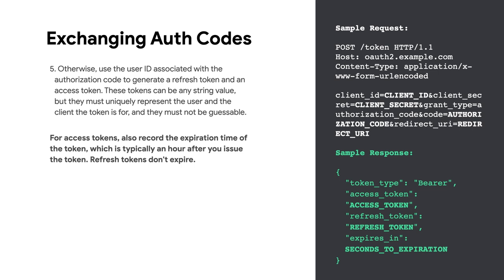For access tokens, also record the expiration time of the token, which is typically an hour after you issued the token. Refresh tokens, however, don't expire. Return a JSON response that looks like the sample on the right in the body of the HTTPS response. Google stores the access token and the refresh token for the user and records the expiration time of the access token. When the access token expires, Google uses the refresh token to get a new access token from your token exchange endpoint.